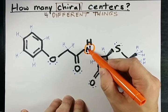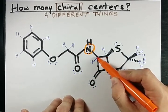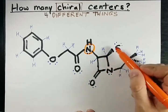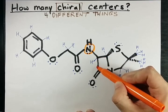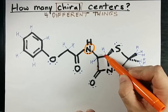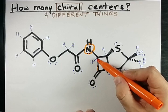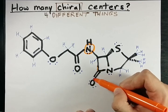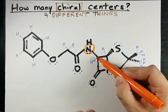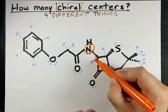This carbon is connected to an NHCO group, and it's connected to the ring going this way and the same ring going the other way. When you go around the ring it's not symmetrical, so those two branches count as different things. Going one way you encounter a carbon connected to hydrogen, sulfur, and nitrogen; going the other way you're connected to a carbon connected to nitrogen, oxygen, and oxygen — completely different. So this carbon is connected to four different things and is a chiral center — that's two.